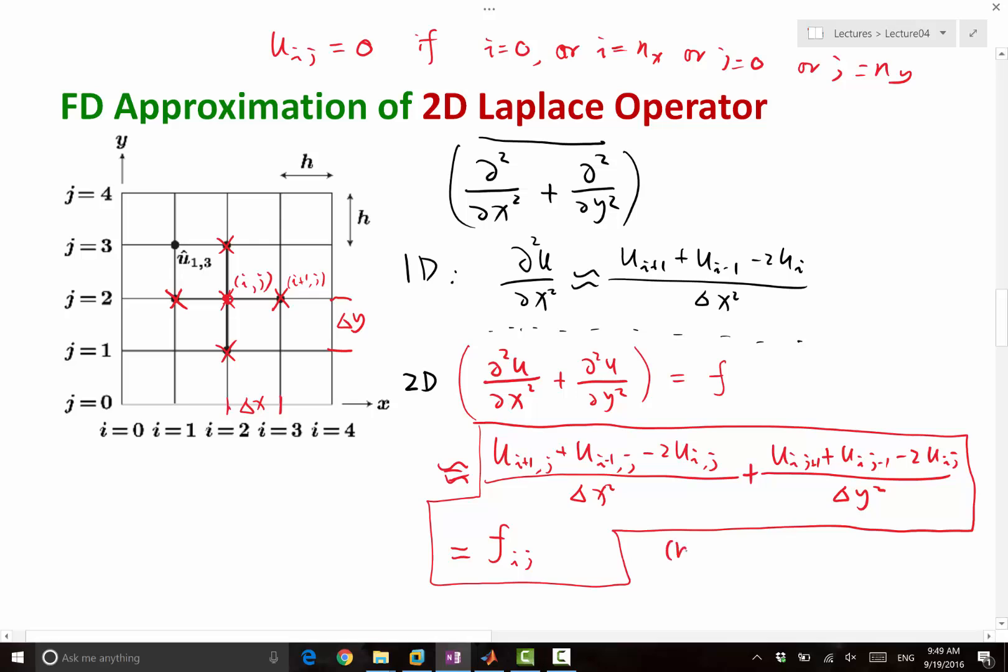So this gives us nx minus 1 times ny minus 1 equations for the same number of unknowns. And all these equations are linear equations. So by this finite difference approximation of the 2D Laplace operator, we converted the partial differential equation into a set of linear equations that uniquely, that combines with the boundary condition, uniquely determines the numerical solution.